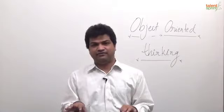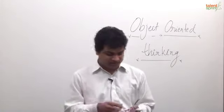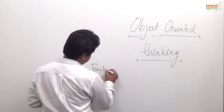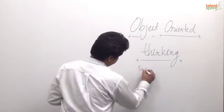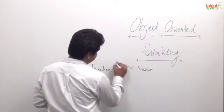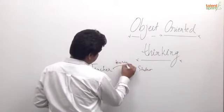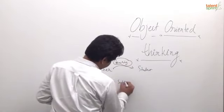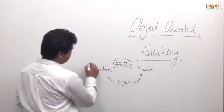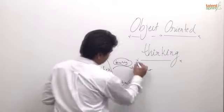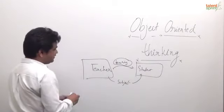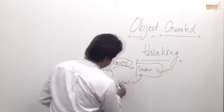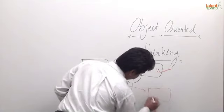When you focus in that way — first on real objects out there — that is called object oriented thinking. When we say teacher and student, the teacher is teaching a student. This is the interaction between these two, and a subject is involved. If you focus on the teacher and student, these are the real world objects. We focus on teacher, then students, then subject, then course.